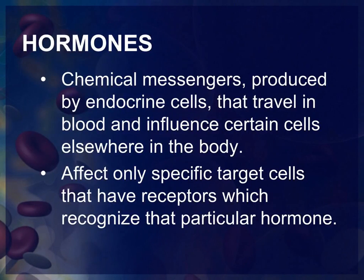Hormones are the chemicals that are produced by the endocrine glands. They are produced in one part of the body, then released into the blood, and then sent to the target organs or target cells where they will carry out the functions of whatever the hormones are supposed to do.